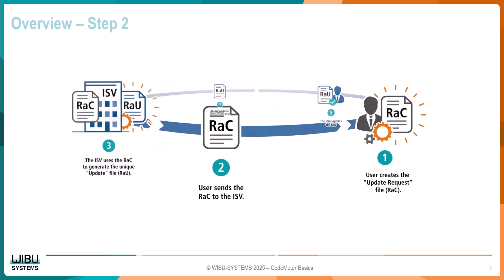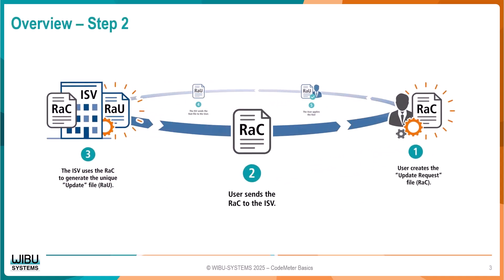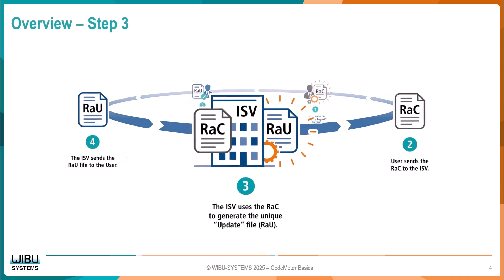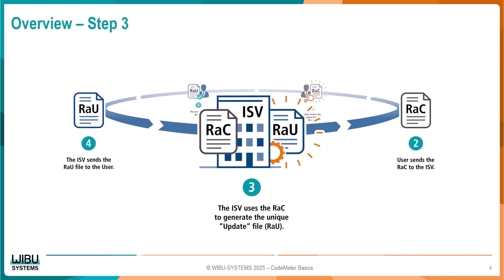Step 2: The user sends the RAC to the Software Vendor, or ISV. Step 3: The ISV uses the received RAC to generate the Update File, or RAU for short.